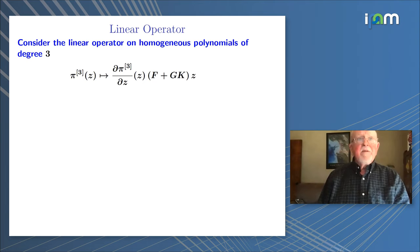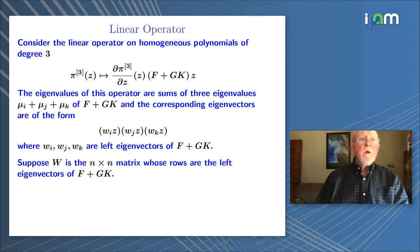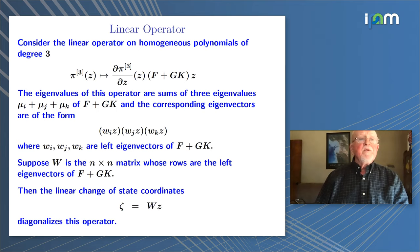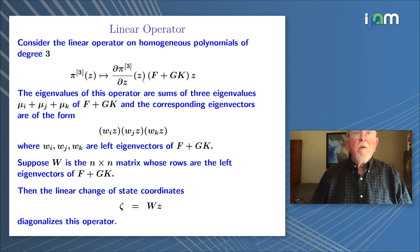To solve these equations, we need to know that the operator taking a cubic polynomial to a scalar-valued cubic polynomial is invertible. The eigenvalues of this operator are sums of three eigenvalues mu-i of F plus GK, and the corresponding eigenvectors are triple products where w-i, w-j, and w-k are left eigenvectors of F plus GK. If we take the matrix W of all left eigenvectors of F plus GK, then a linear change of coordinates from z to zeta diagonalizes this equation, so we can solve it term by term. That's an important fact.